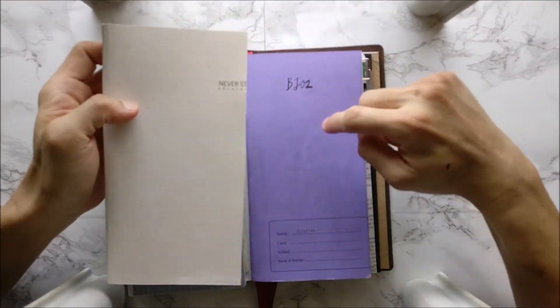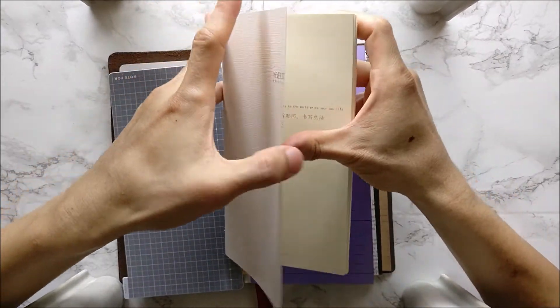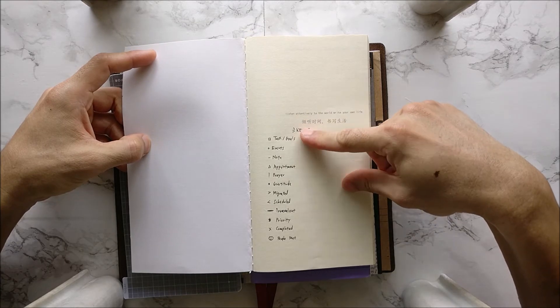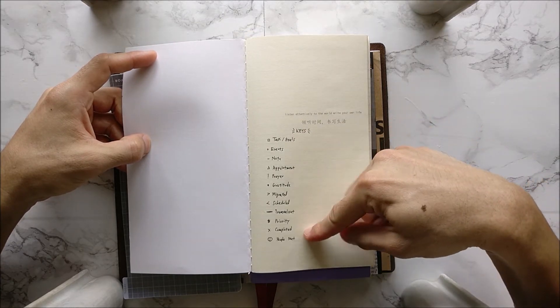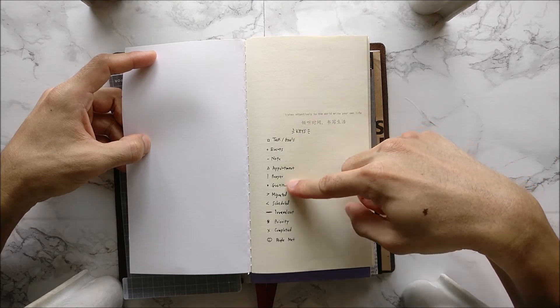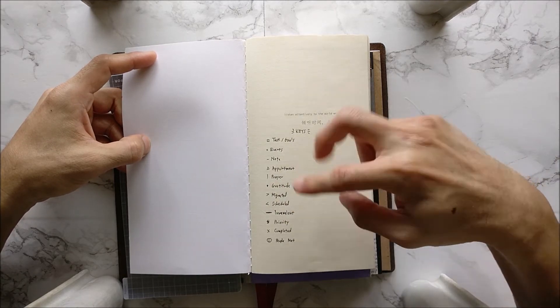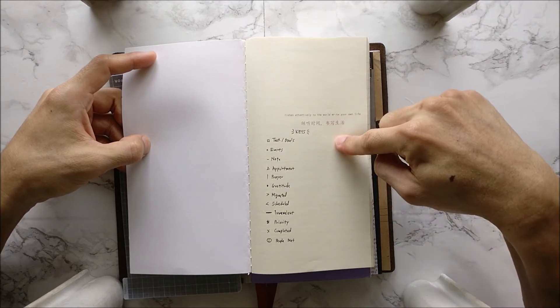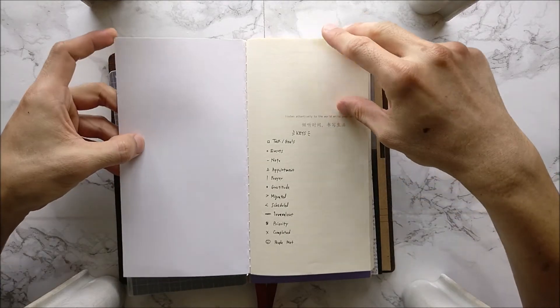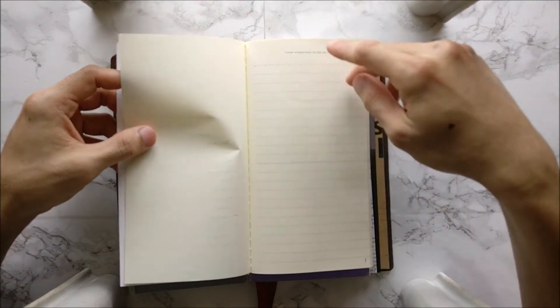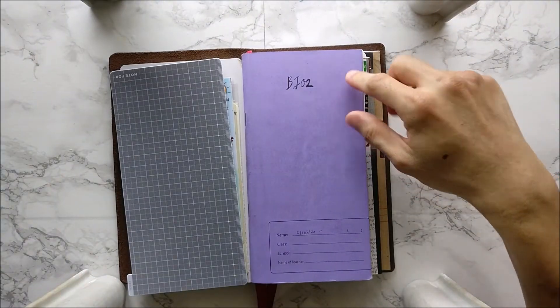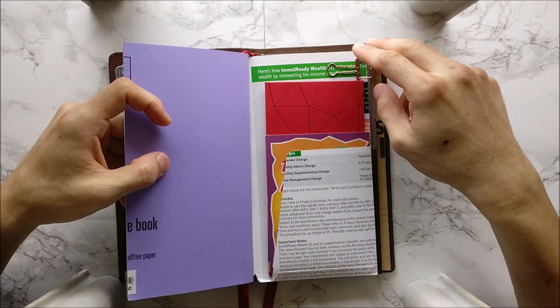And this is the one that's going to replace this. And you can see from here, my keys. So this is how I set it up, actually. These are the keys that I use. Task goals, events, note appointments, prayer, gratitude, and the usual bullet journal style keys. Yeah, to find out more about bullet journal, you can actually do an online search on that. Very very powerful, simple system. And you can see that this is a new one that I can be using to replace this. And this will be my first notebook insert in place.